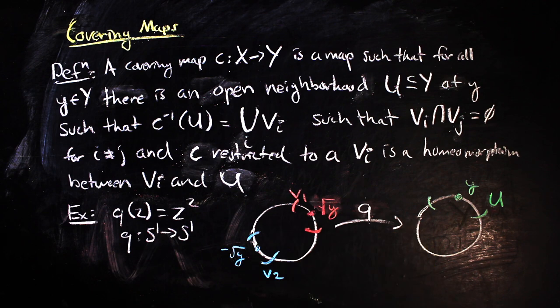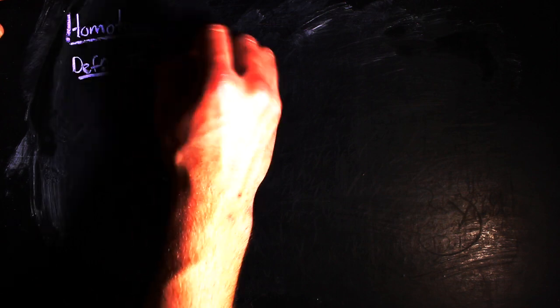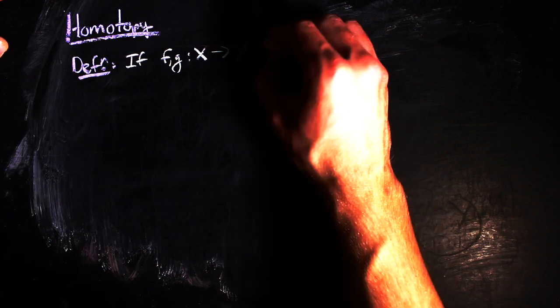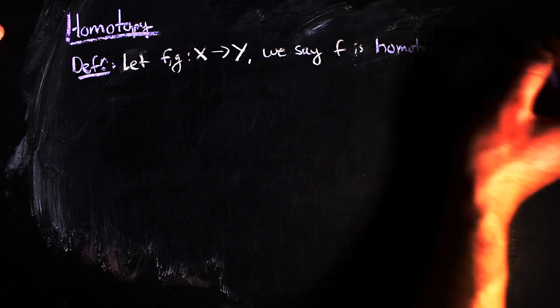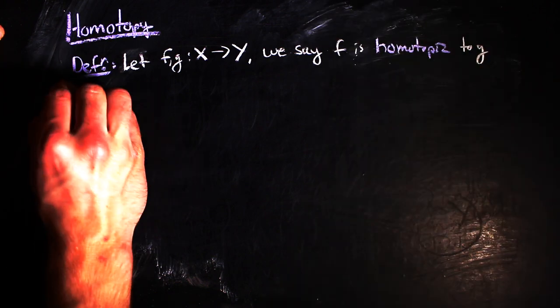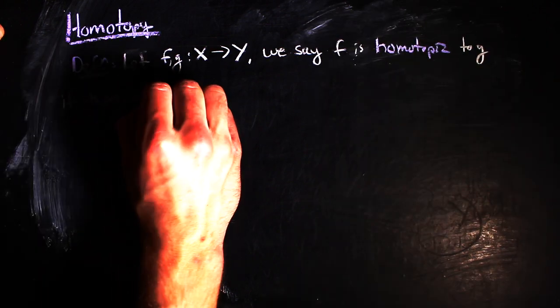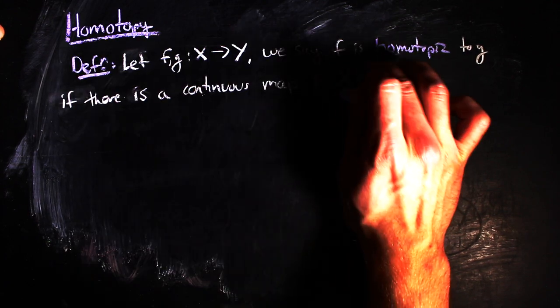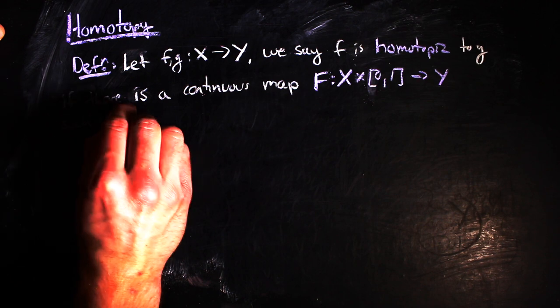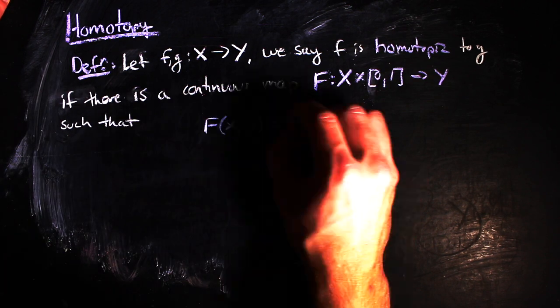The next item on our list of ingredients is homotopy. In particular, homotopy gives us an idea about how maps can be deformed to one another. So here's the definition. If f and g are continuous maps of the topological space x to the topological space y, we say that f is homotopic to g if there is a continuous map F from the Cartesian product of x with the closed interval from 0 to 1 to y,